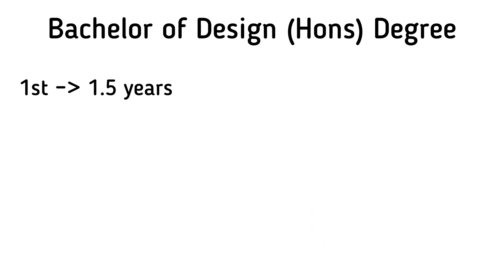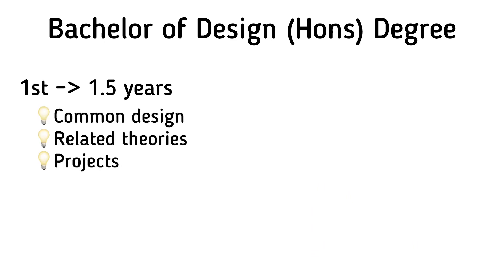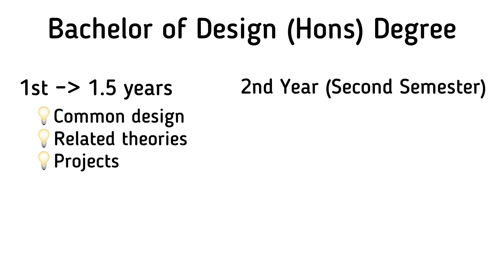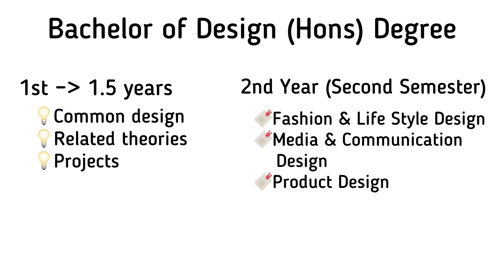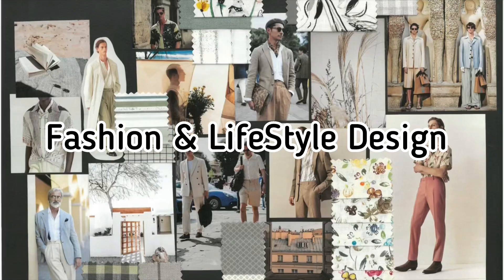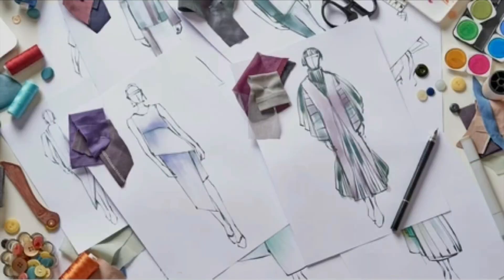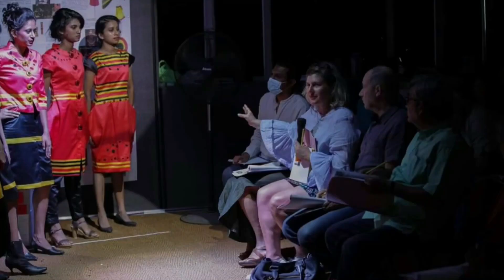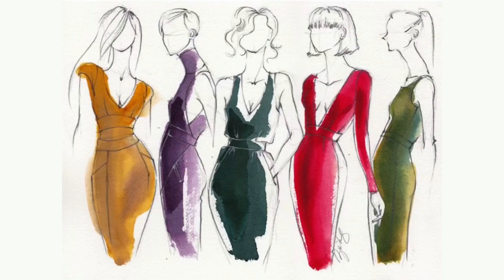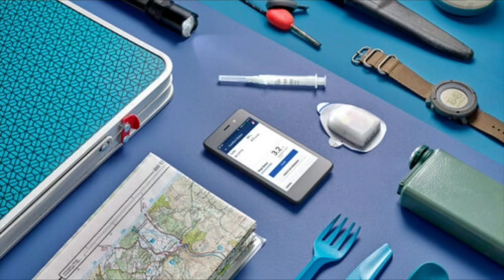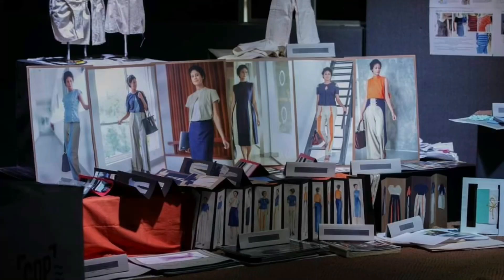For the first one and a half years, all students study common design-related theories and projects. From the second year, second semester, students are required to choose a specialization field. Currently there are three different fields available: Fashion and Lifestyle, Media and Communication, and Product Design. The Fashion and Lifestyle specialization aims to give insights into the significance of fashion design as well as explore a diverse range of styles, lifestyle products, and their associated production methods.